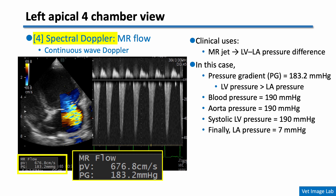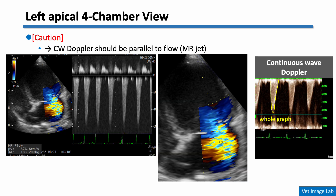Back to our case: MR velocity is approximately 6.8 m/s and the pressure gradient between LV and LA is about 180 mmHg. If this dog's systemic blood pressure is 190 mmHg, we assume LV systolic pressure is also 190. Subtracting the pressure gradient from LV pressure, estimated left atrial pressure is only 7 mmHg — so despite a very high velocity, left atrial pressure is still within normal range. To estimate the pressure gradient accurately, the Doppler cursor should be aligned parallel to the direction of the MR jet. If not properly aligned, velocity will be underestimated and the pressure gradient will not reflect the true value.